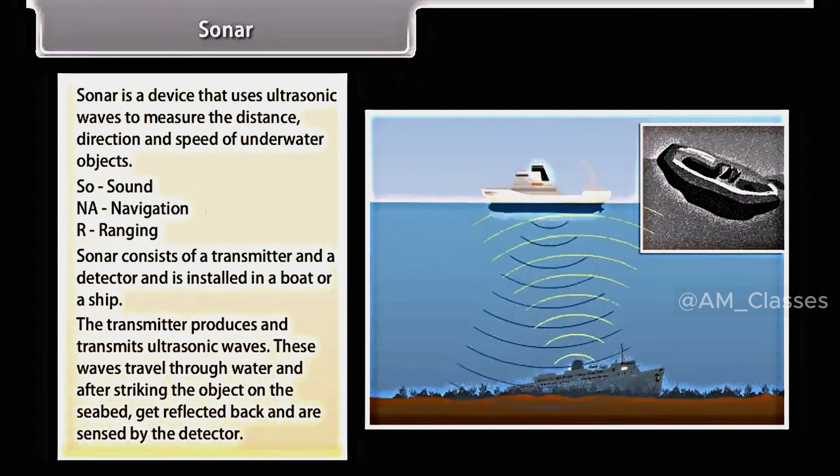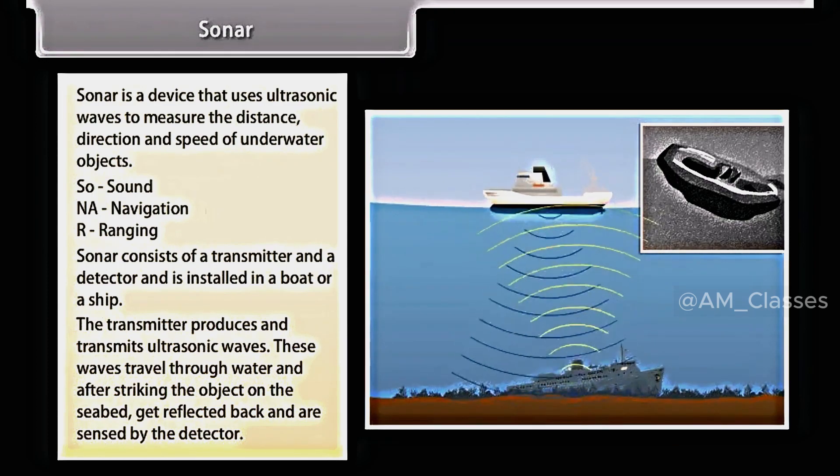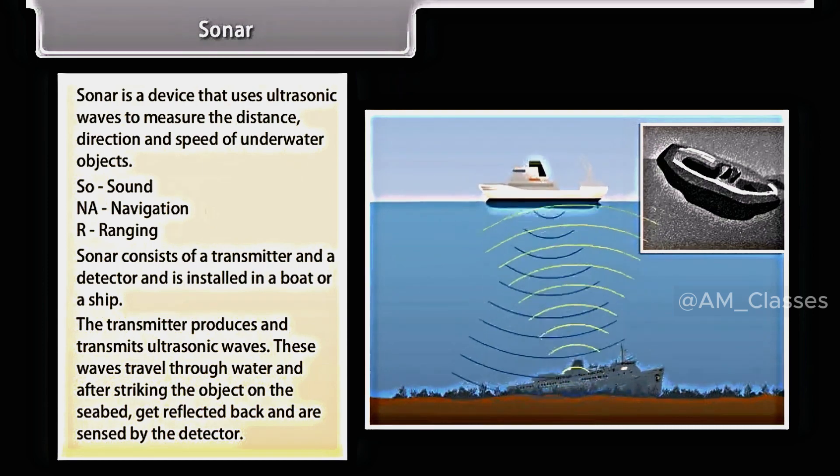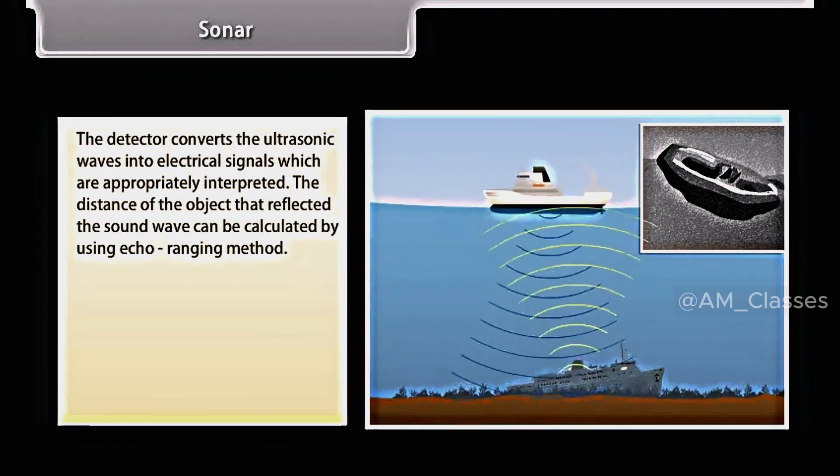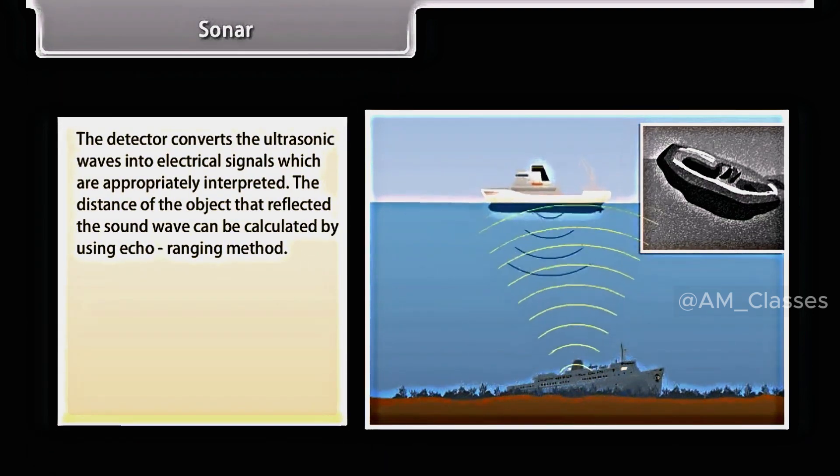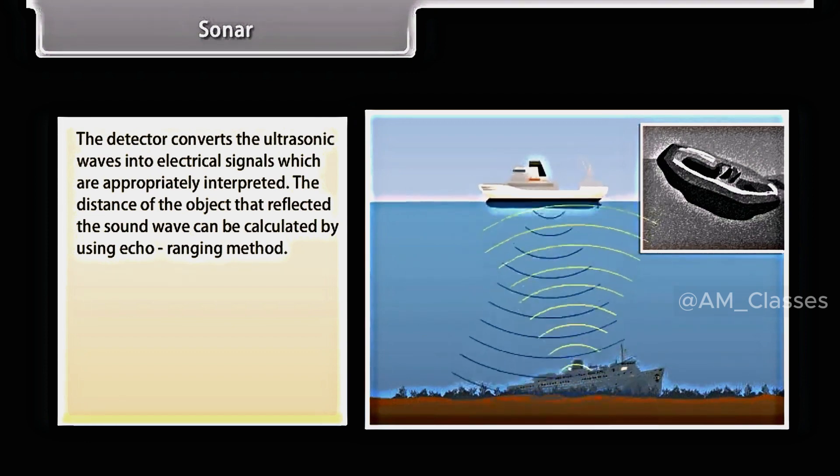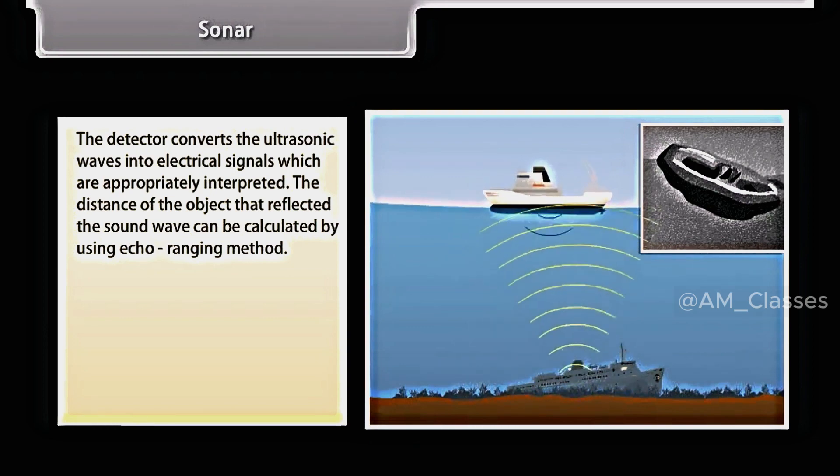The transmitter produces and transmits ultrasonic waves. These waves travel through water and after striking the object on the seabed, get reflected back and are sensed by the detector. The detector converts the ultrasonic waves into electrical signals which are appropriately interpreted. The distance of the object that reflected the sound wave can be calculated by using echo-ranging method.